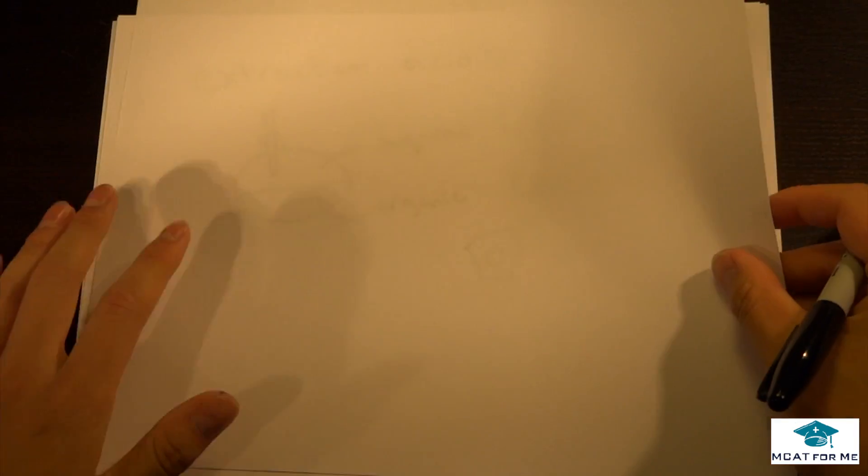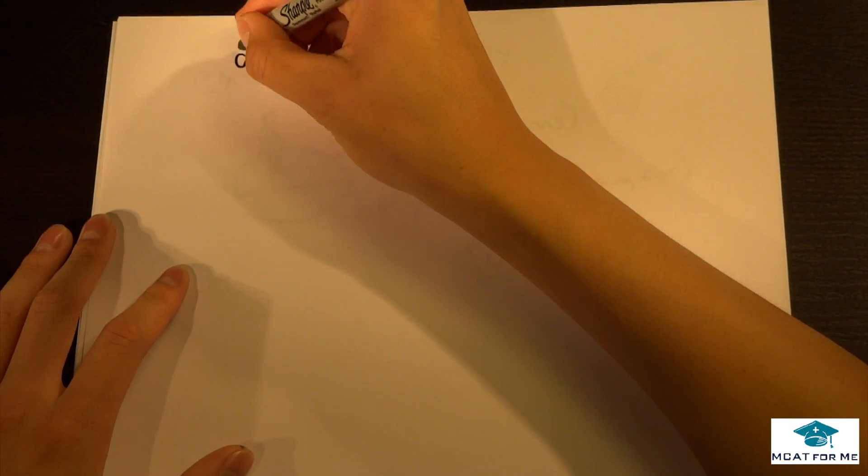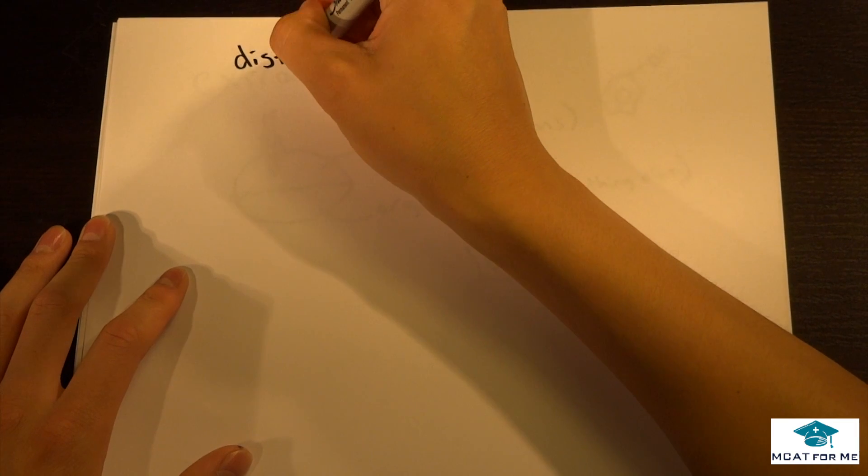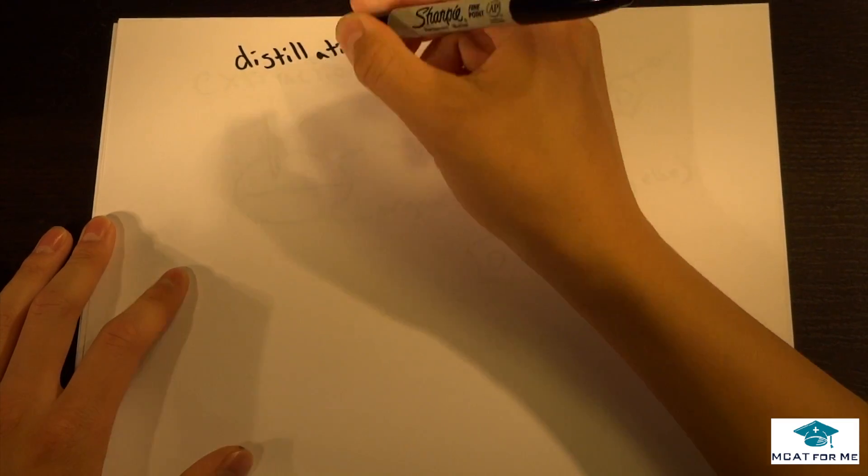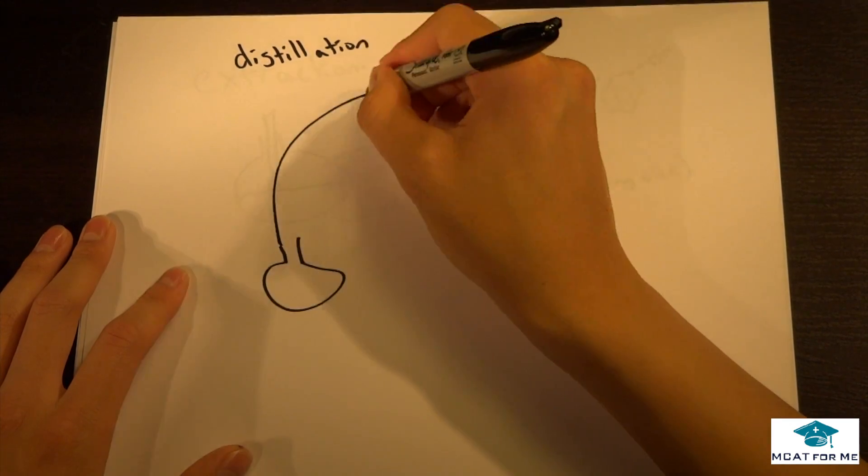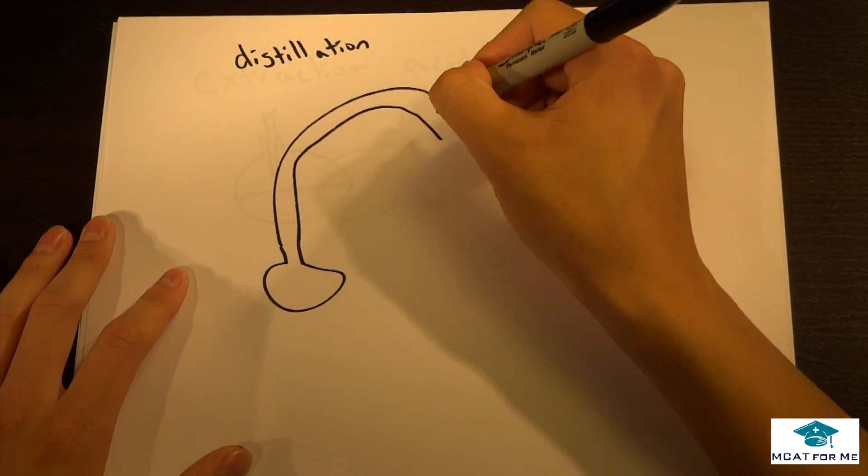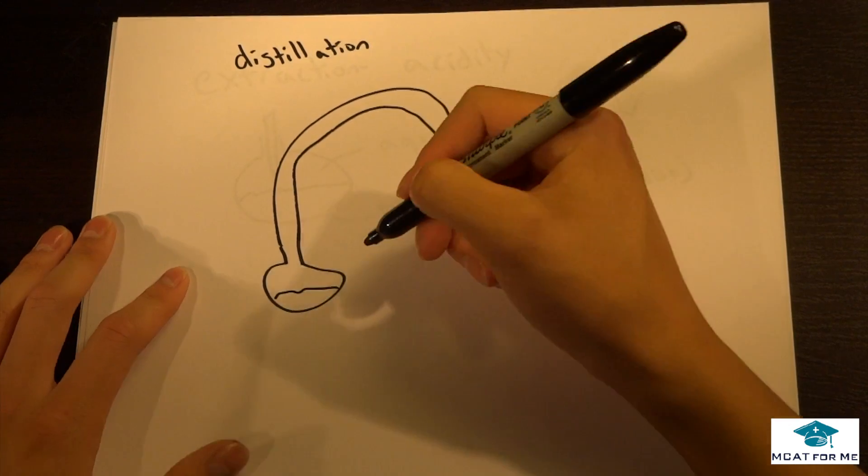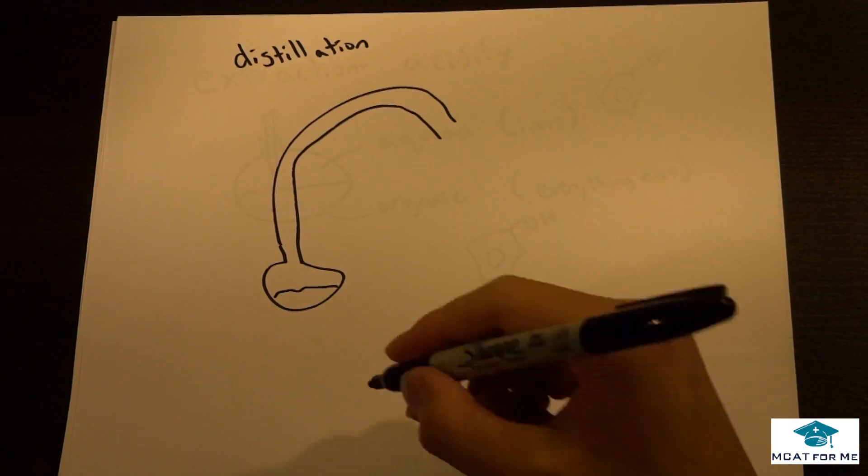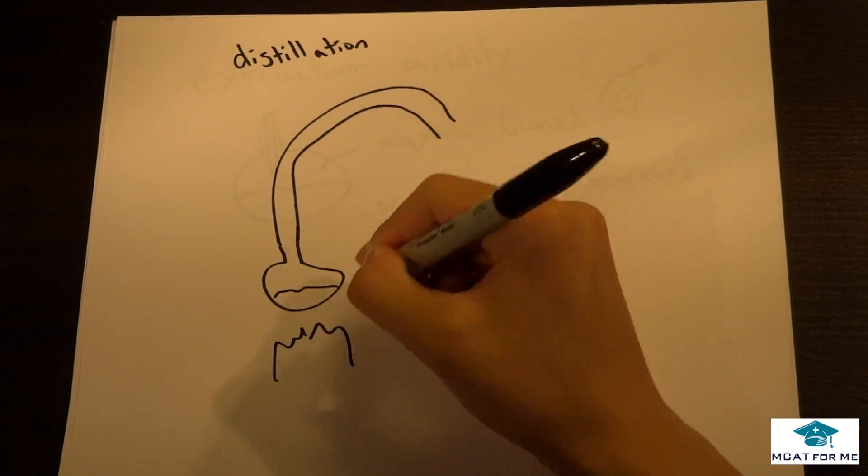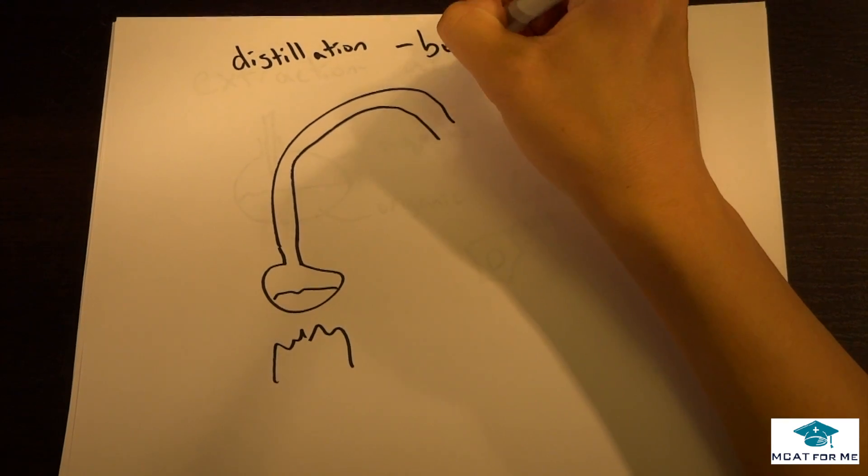And so if we look at what is distillation. So distillation, how it pretty much works is we have this little flask down here and we boil it. So this is separating by boiling point.